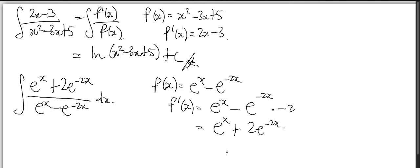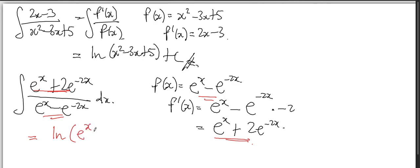So f'(x) is e to the power of x plus 2e to the power of negative 2x, which looks exactly the same as the numerator, and f(x) is e to the power of x minus e to the power of negative 2x. Therefore the answer is ln(e to the power of x minus e to the power of negative 2x) + c.